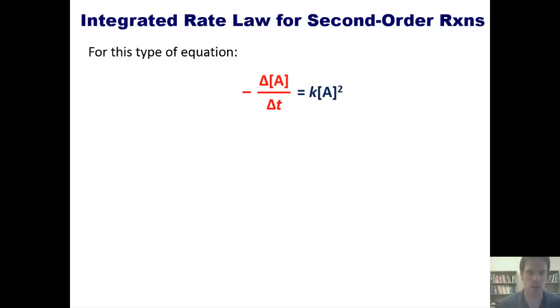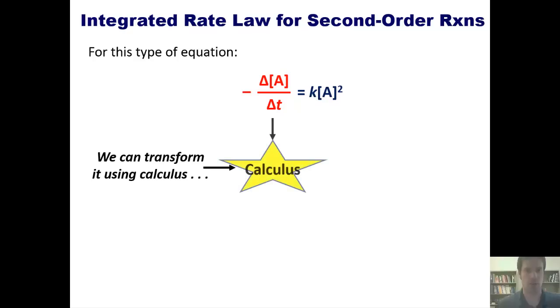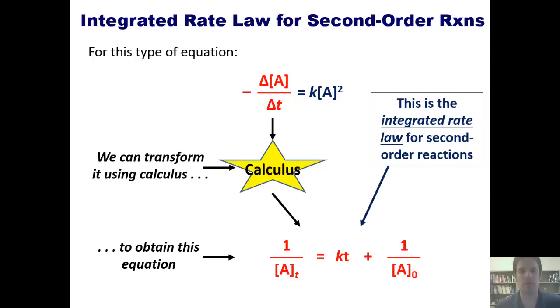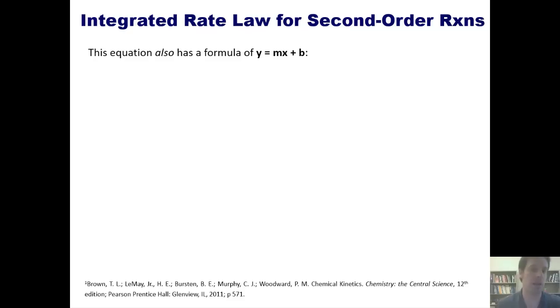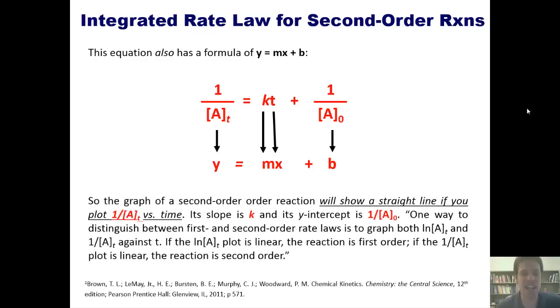So for this type of equation right here, we can transform it using calculus into this equation. This is called the integrated rate law for a second order reaction, if you have a reaction that is second order with respect of only one reactant, A. Once again, for students who take this from my class, I will totally give you this equation on the exam. This equation, you should notice, also has a formula of Y equals MX plus B. If I take this and compare this 1 over A part to Y, K to M, T to X, and this 1 over A part to B, it indeed looks like a Y equals MX plus B equation. Here's the deal, though. The graph of a second order reaction will show a straight line if you plot 1 over A versus time. Its slope is K, and its Y-intercept is 1 over A.